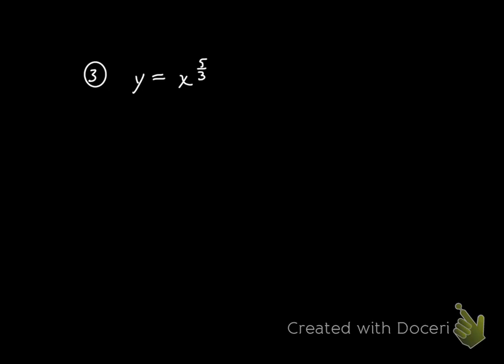All right? So here's our third example. y equals x to the five-thirds. So some students have difficulty. The exponent is a fraction. So I know that I go power times the coefficient. Five-thirds times one is five-thirds. How about the exponent?